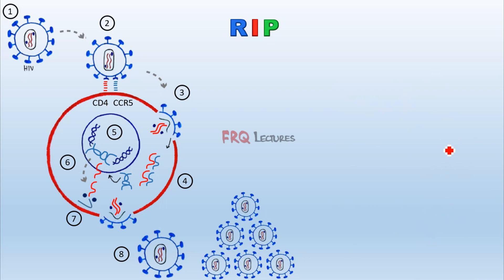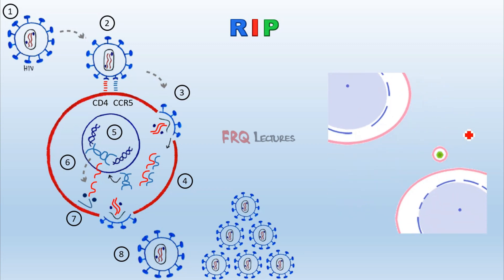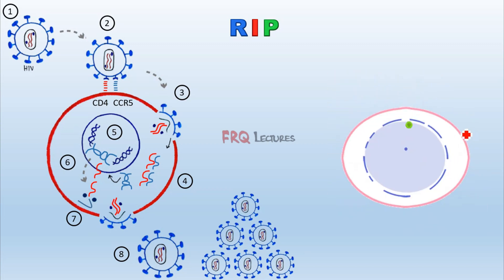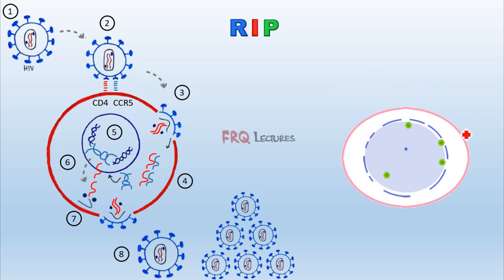An animation illustrates this clearly: HIV enters the cell, multiplies, and as all the copies leave, each takes a portion of the cell membrane with them. This cycle repeats continuously, and with each replication the cell loses portions of its membrane. Ultimately, the cell loses its integrity and ceases to exist, dying as a result.